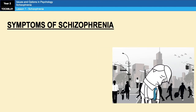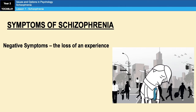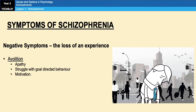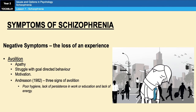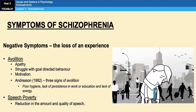Moving on to negative symptoms — these refer to the loss of an experience or a loss in ability or control over something. An example is avolition, also sometimes called apathy, where a sufferer struggles to begin or keep up with goal-directed behavior. Three signs of avolition have been identified: poor hygiene, lack of persistence in work and education, and lack of energy. Another negative symptom is speech poverty — a reduction in the amount or quality of speech, often accompanied by a delay in responses during conversation.